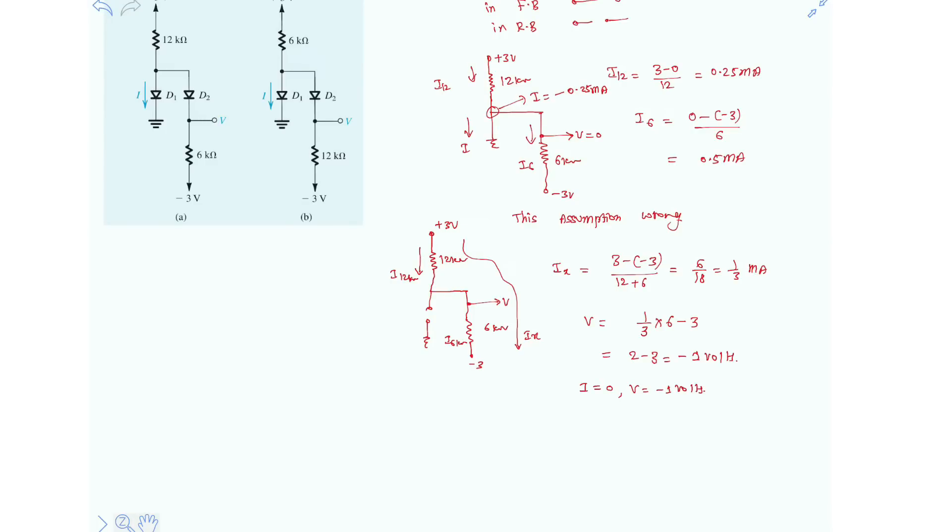And in this case, now you just observe V equals minus 1V, where V is here. If it is minus 1V, D1 is clearly reverse biased. So our solution is valid.